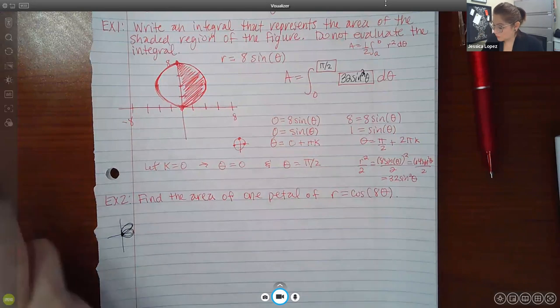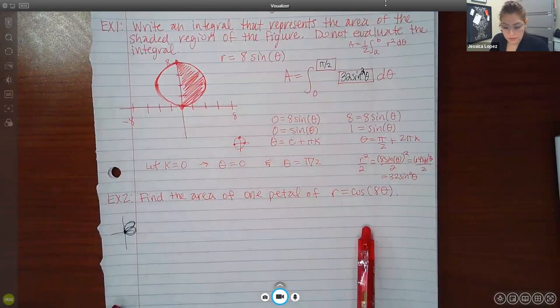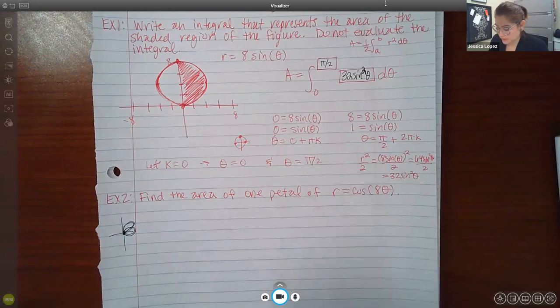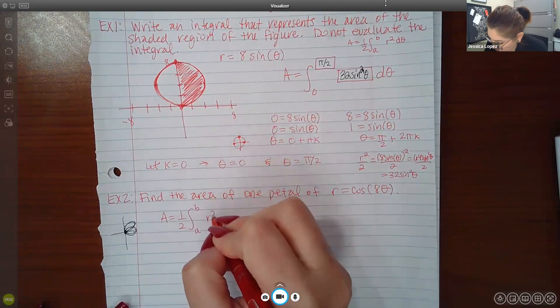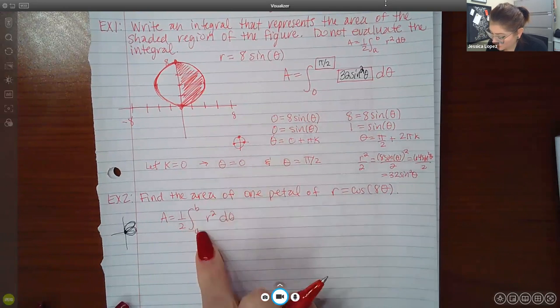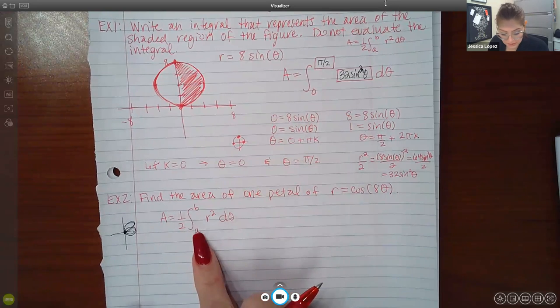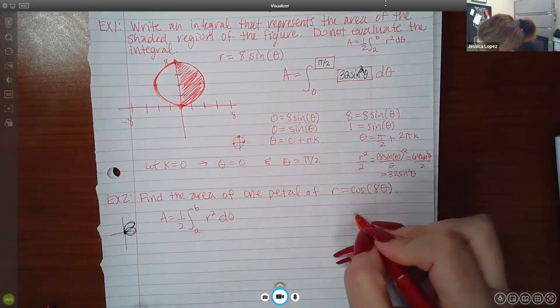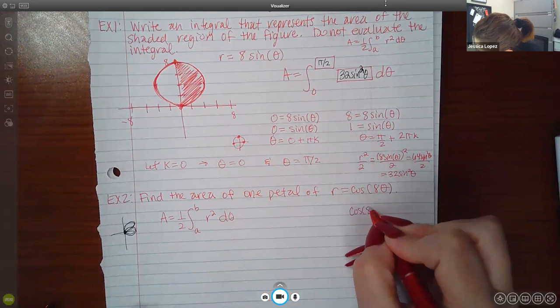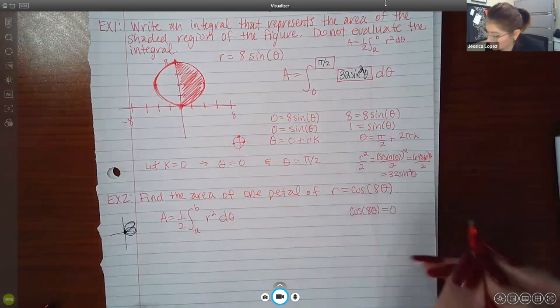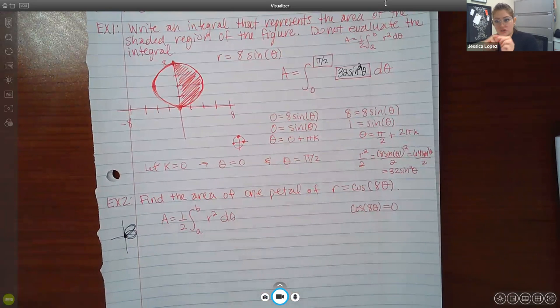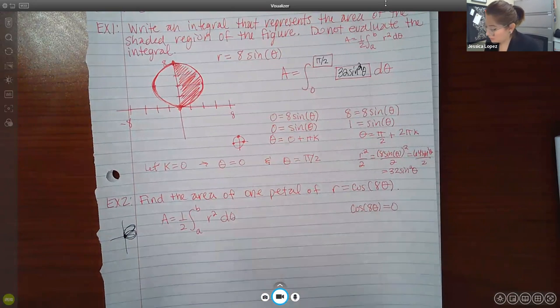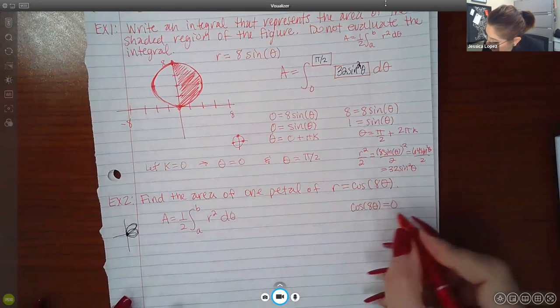This is significant because this is how you know where the beginning of your petal starts and where the end of your petal starts. You just have to do one petal. So you just need one interval from the first time it does it and then to the second time that it hits zero.